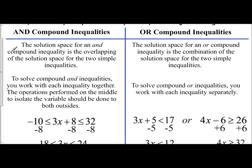The solution space for an and compound inequality is the overlapping region of the two simple inequalities. It's what they have in common. It has to fit both of the characteristics. For an and compound inequality,